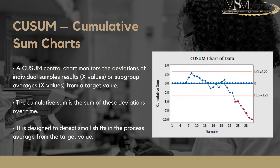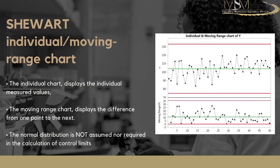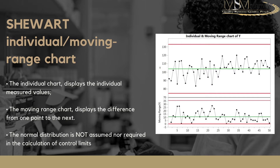Although not as frequently used as a Shewhart chart, the CUSUM chart is designed to detect small shifts in the process average from the targeted value, and it has been said that it can detect these changes faster than a general individual or moving average Shewhart chart. Shewhart charts come in two types: the individual chart, which displays individual measured values, and the moving range chart, which displays the difference from one point to the next. With Shewhart charts, normal distribution is not assumed or required to calculate your control limits.